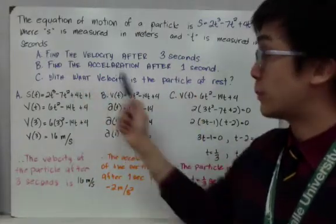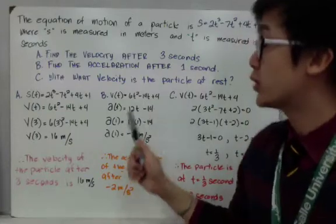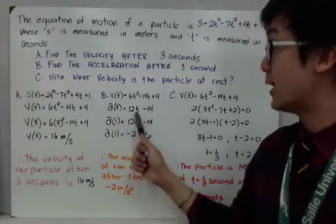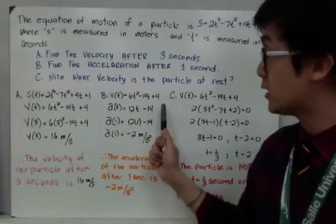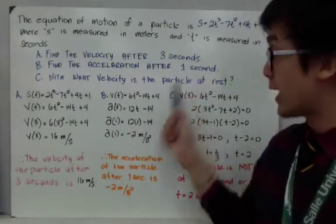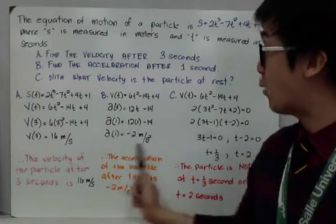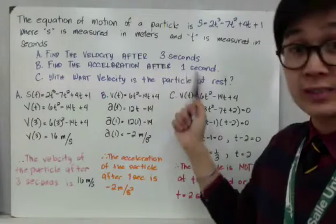Now to answer letter B, to find the acceleration after 1 second, we need to get the derivative of our velocity function for our acceleration, and it gives us 12t minus 14. After finding the acceleration function, plug in the value of 1 for 1 second, and you'll have negative 2 meters per second squared. So this is our acceleration for this particular particle in motion after 1 second.